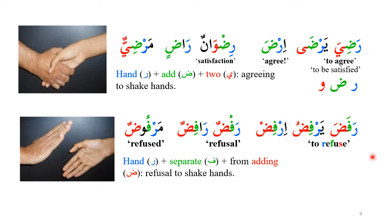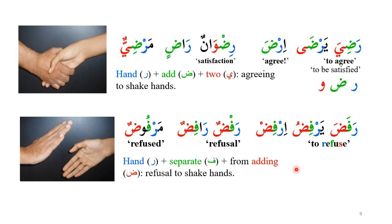'Rafaza' means to refuse. Ra is the hand, fa indicates separation — as in 'faraq,' separation — and waw means to add. So separating from adding the hand is to refuse. Both 'raziya' (agree) and 'rafaza' (refuse) are easy to understand using the individual letter meanings. Notice that the English word 'refuse' has a similarity to Arabic 'rafaza' — I think this English word actually comes from Arabic.